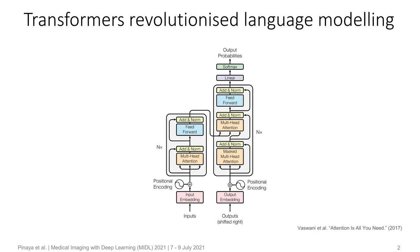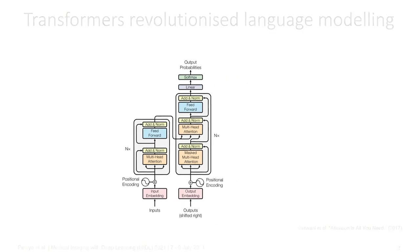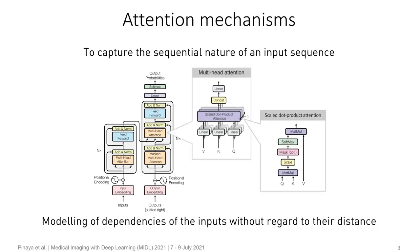In these last years, transformers have revolutionized the field of natural language processing, where they have become the de facto network architecture for most language tasks. A great part of their success relies on attention mechanisms, where they are used to capture the sequential nature of an input sequence, dispensing with recurrence and convolution entirely. These attention mechanisms allow the modeling of dependencies of the inputs without regard to their distance, enabling the learning of complex long-range relationships.